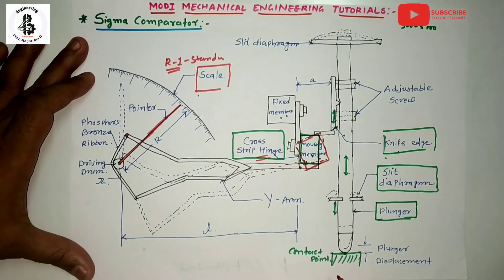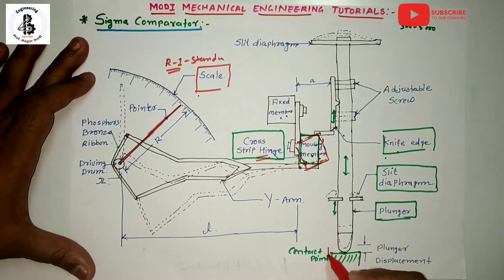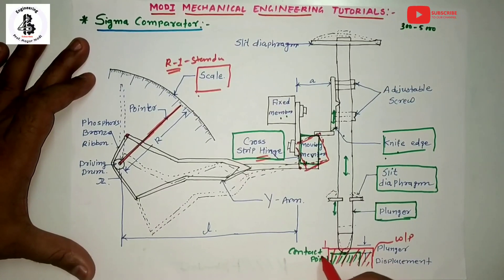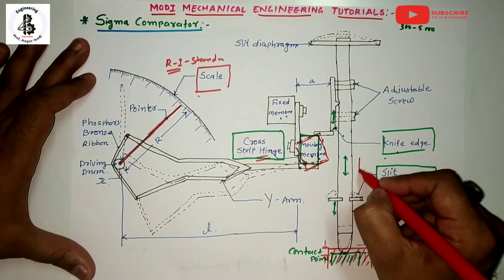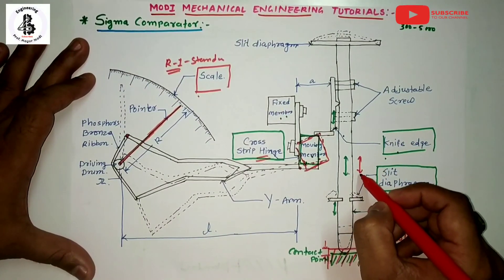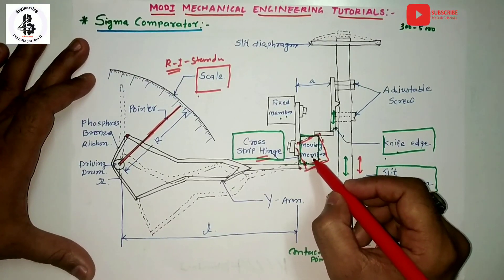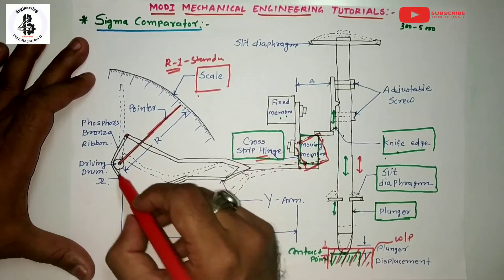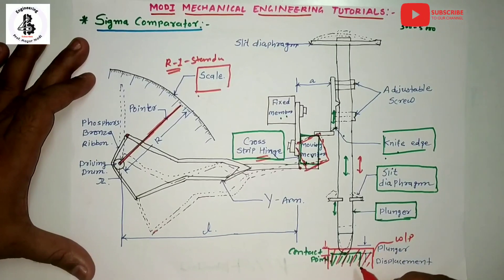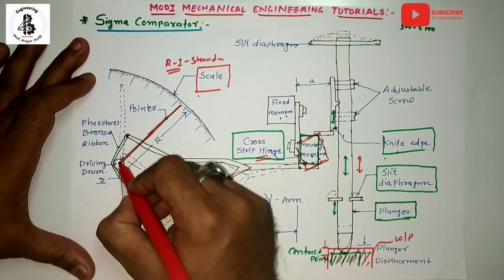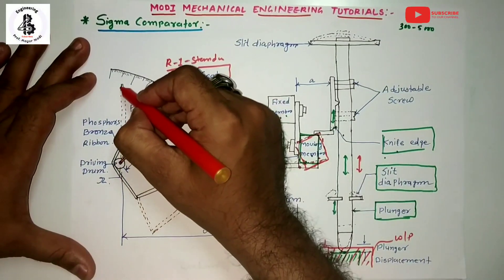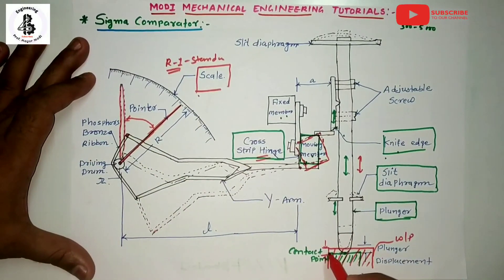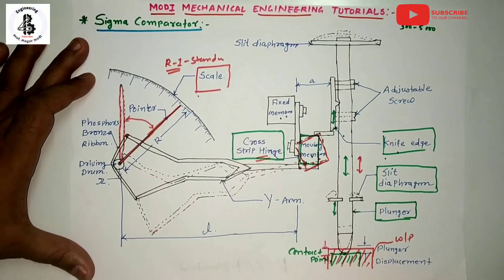The standard workpiece is now replaced by our component (shown in red as the workpiece material). According to the change in dimensions, the plunger moves upward, making a new position. According to that new position, the moving member deflects and accordingly the Y-arm deflects into its second position. This change indicates the difference between the workpiece and the standard on the scale as a second reading.